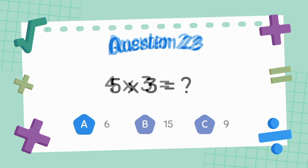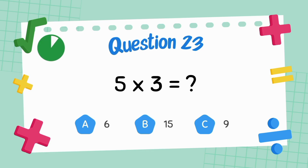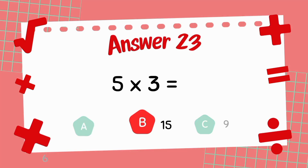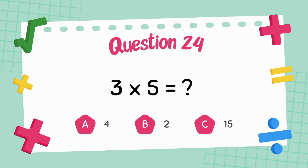What is five multiply three? The answer is fifteen. What is three multiply five?